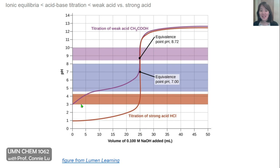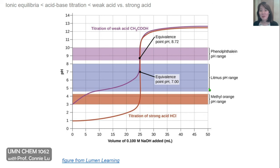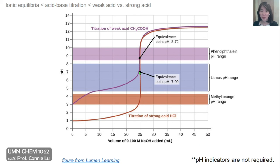Overlaying the titration of a strong acid in orange versus a weak acid in purple, in the basic regime they almost overlap perfectly, but they have different equivalence points, different starting points, and the weak acid case has a buffer region. The colored stripes correspond to pH indicators that change color over specific pH ranges. If we were trying to find the endpoint of a titration, we would match the equivalence point pH to the correct indicator. While indicators are not required on exams in this course, they will be used in demos, and this is how you would choose the correct pH indicator depending on where your equivalence point pH falls.